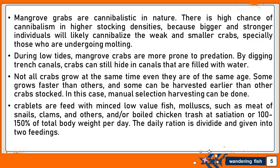Crablets are fed with minced low-value fish, molluscs such as meat of snails, clams, and others, and/or boiled chicken trash at satiation or 100–150% of total body weight per day. The daily ration is divided and given in two feedings.